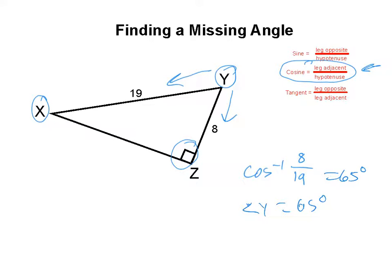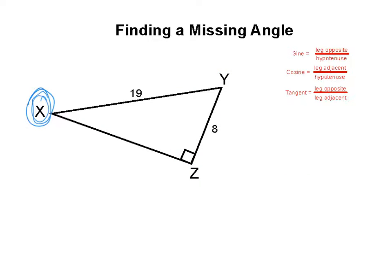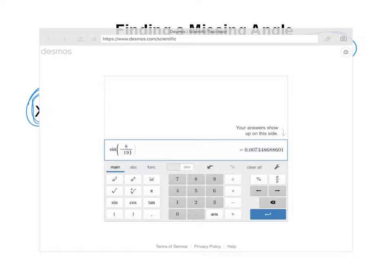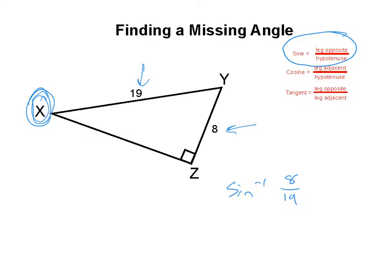Let's find angle X too — just as one more example — let's find it using one of these ratios. To find angle X, I have a hypotenuse and an opposite side, so I'm going to use sine. Sine⁻¹, because we're using the sides to find an angle. Leg opposite is 8, hypotenuse is 19. So sin⁻¹(8/19) gives us a measurement of about 24 to 25 degrees. The measure of angle X is 25 degrees.